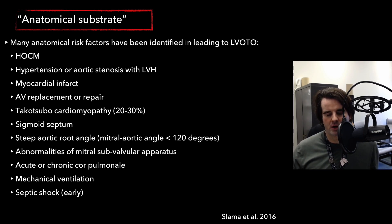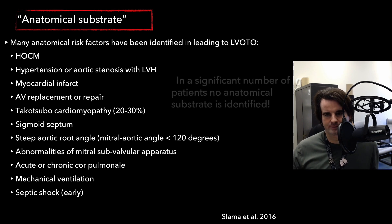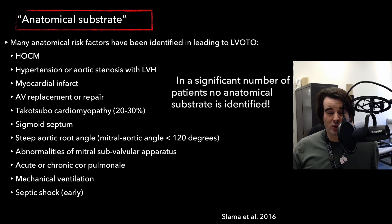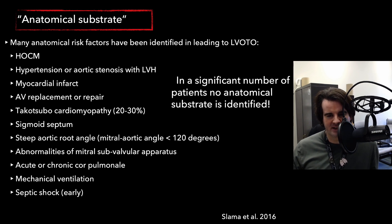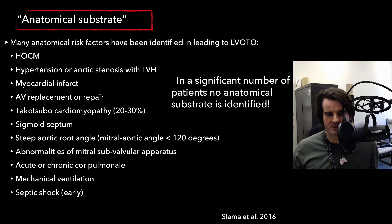In septic shock, a critical drop in systemic vascular resistance combined with a drop in preload and escalation of vasopressors or inotropes can trigger this. Interestingly, in several studies, a significant number of patients have no anatomical substrate identified. This reinforces the idea that it really takes the conditions of a drop in preload, drop in SVR, and an increase in contractility to create the right environment for systolic anterior motion or dynamic obstruction.